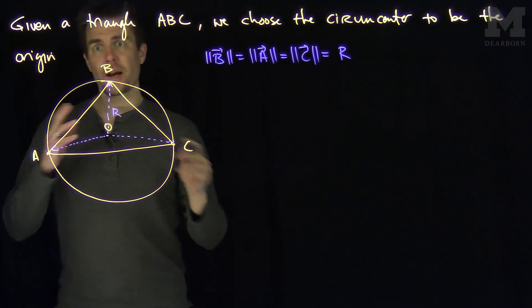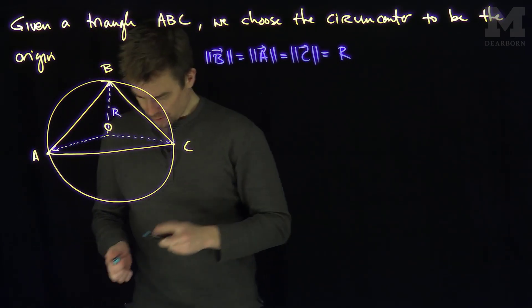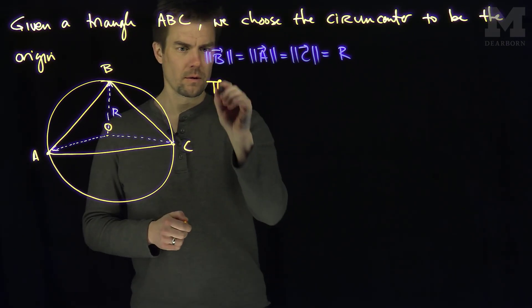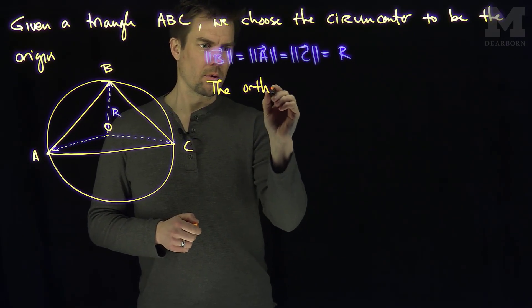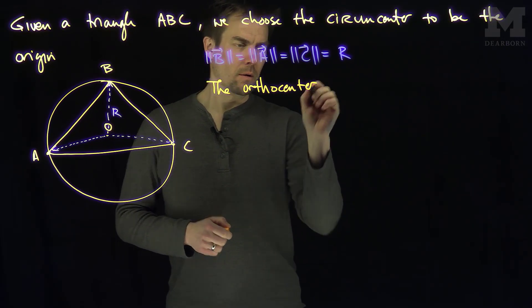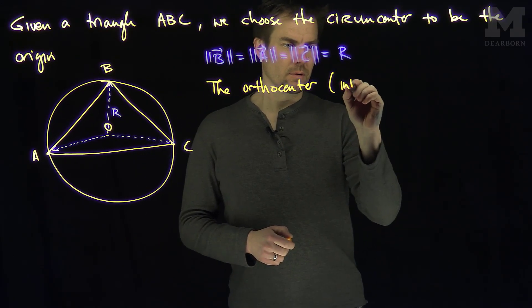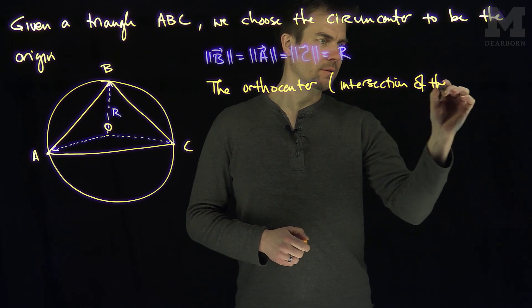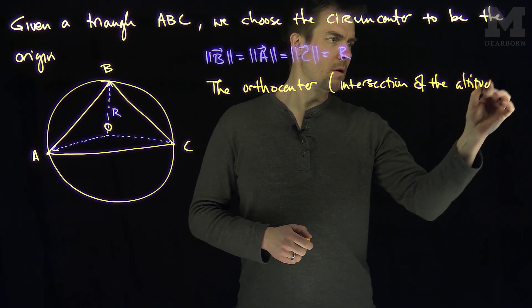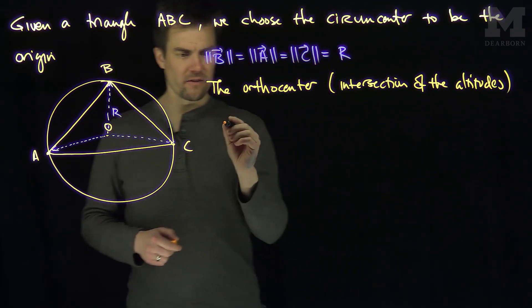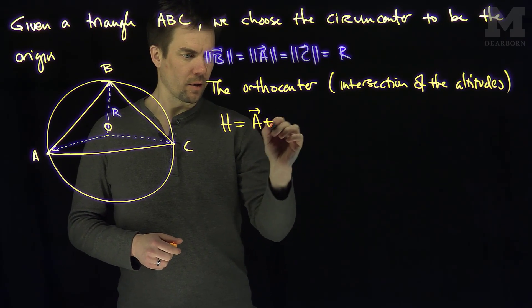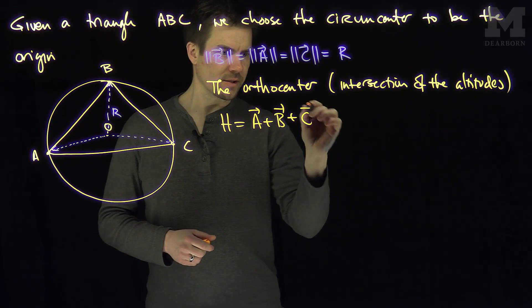Now, we claim that we can find the orthocenter. So our claim is that the orthocenter, the intersection of the altitudes, is given by H, which is A plus B plus C.